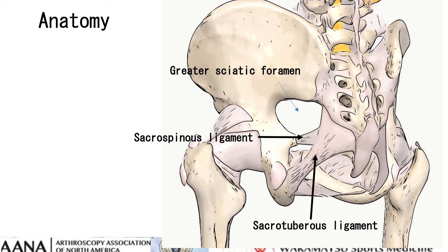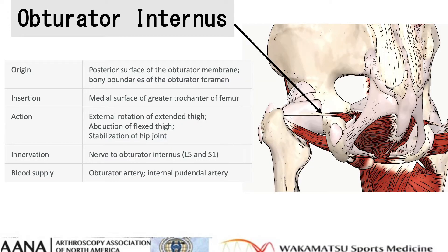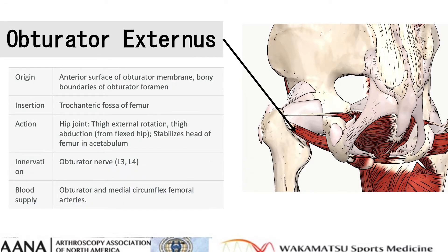This slide shows the posterior aspect of the pelvis. This is the greater sciatic foramen, the ileum, the ischium, and the sacrum. The sacrotuberous ligament and sacrospinous ligament are also shown. The obturator internus muscle originates on the medial surface of the obturator foramen and ischium near the membrane and the rim of the pelvis. It exits the pelvic cavity through the lesser sciatic foramen. The obturator externus originates from the anterior surface of the obturator membrane and the bony boundaries of the obturator foramen, inserting to the trochanteric fossa. It is innervated by the obturator nerve.